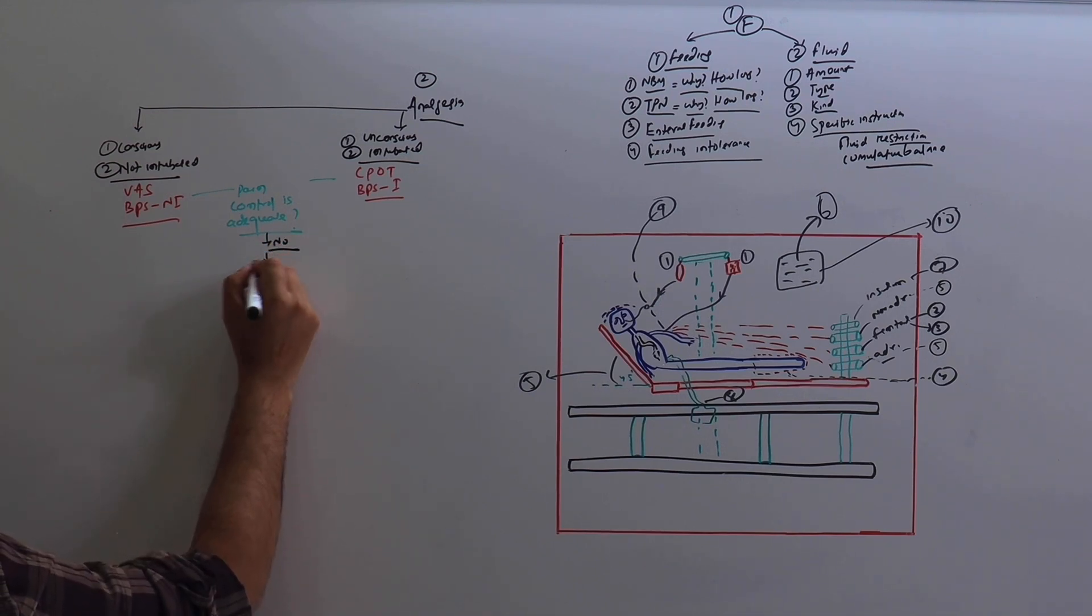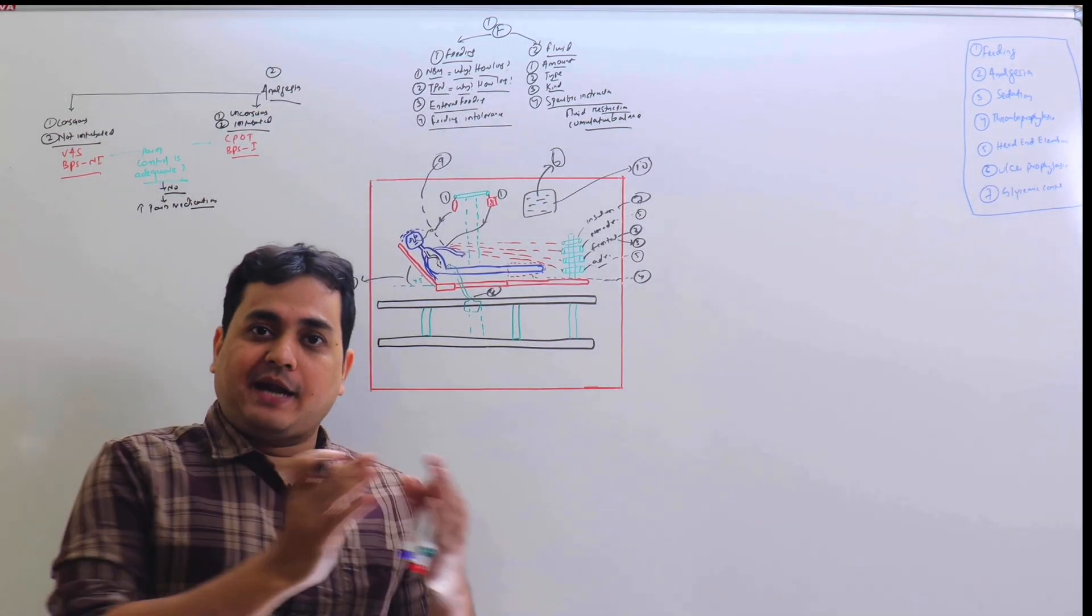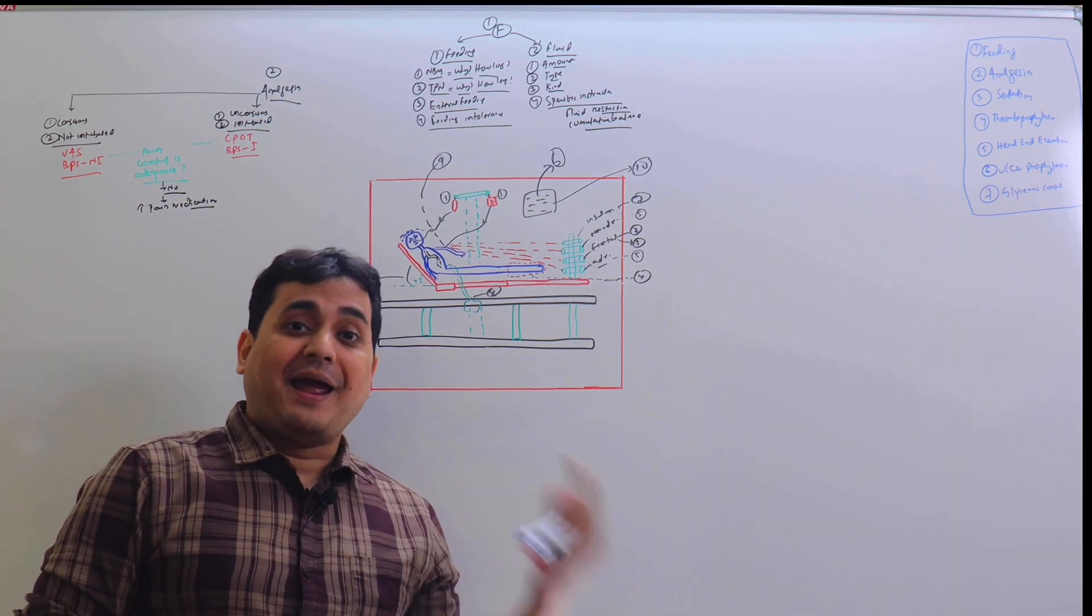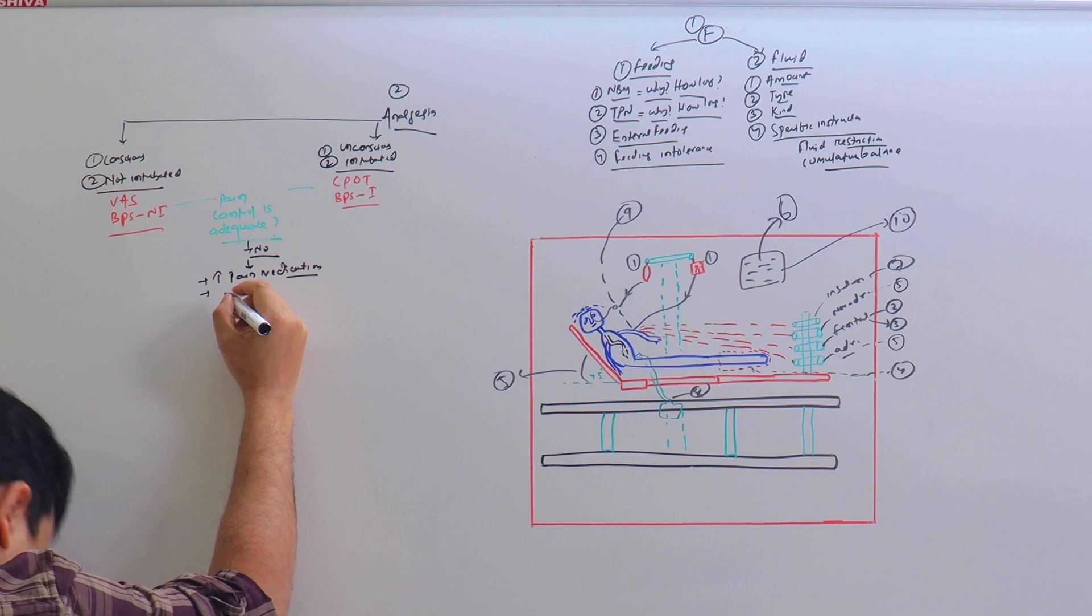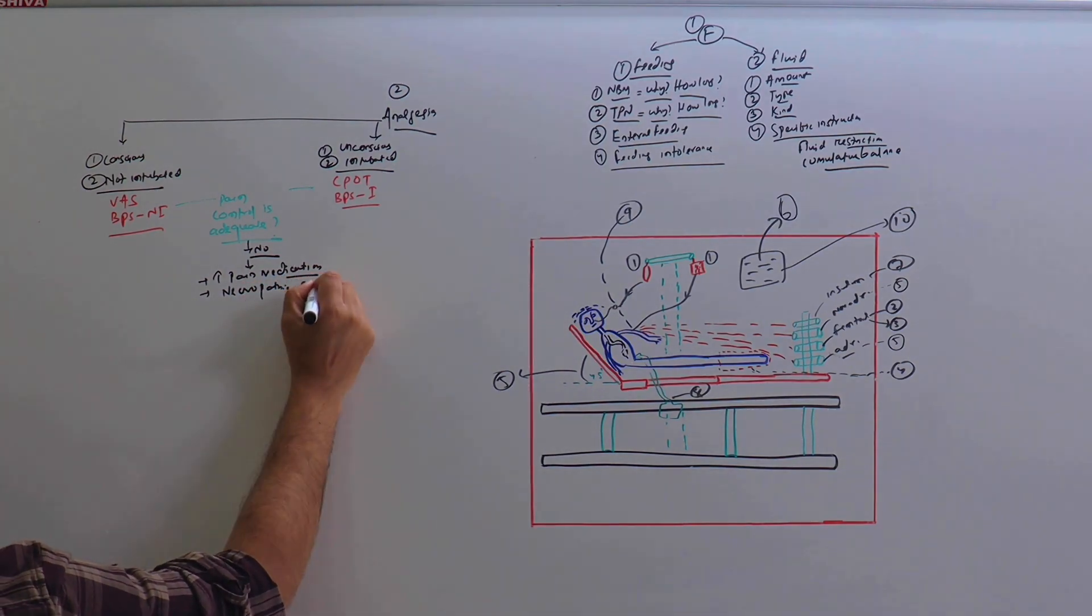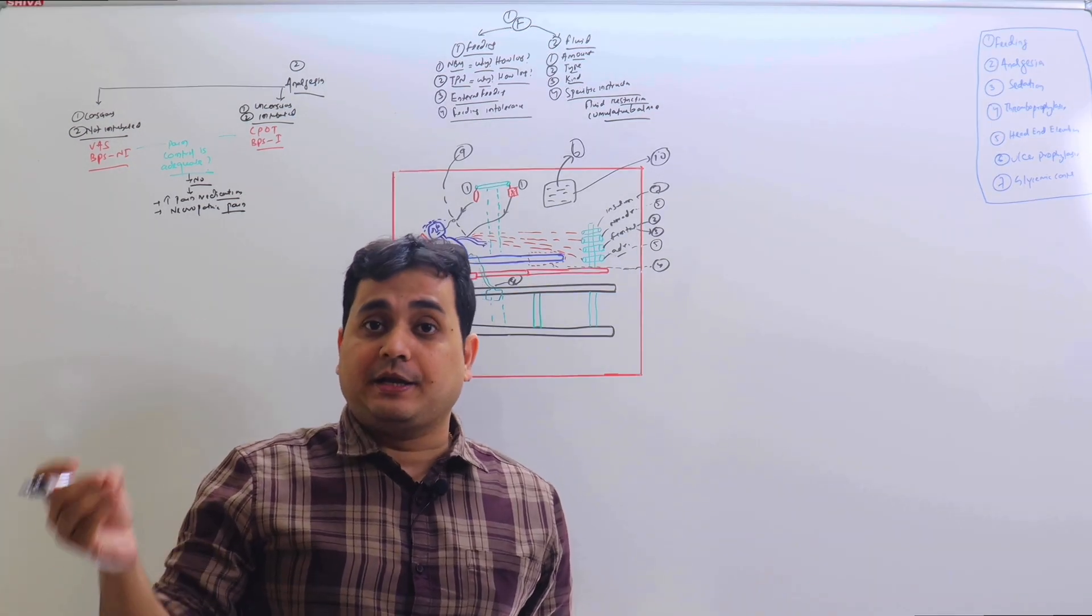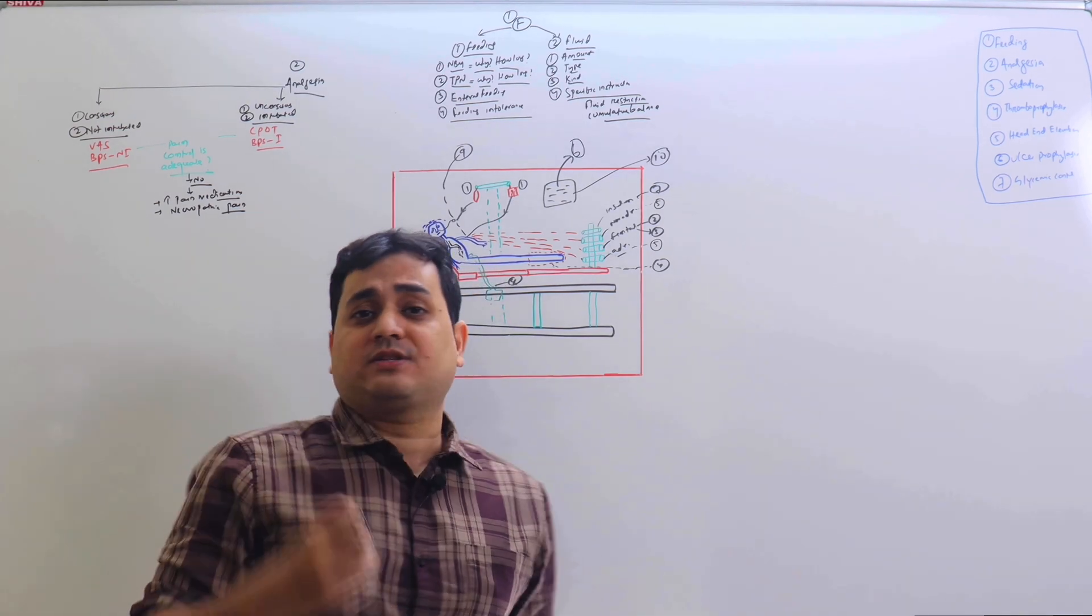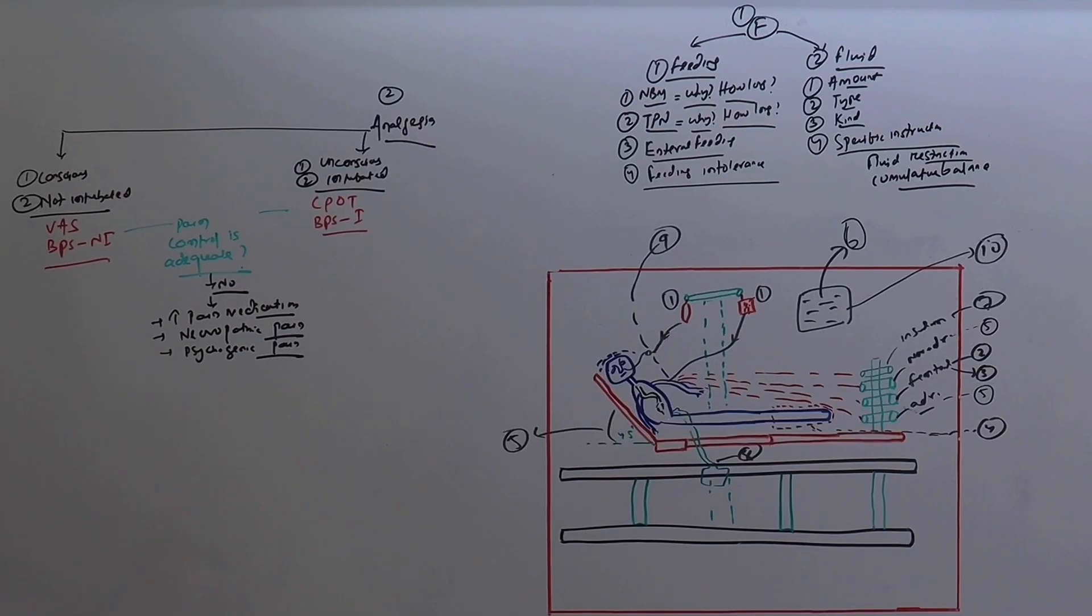If the answer is no, then you may need to escalate pain medication. Here you need to follow the WHO pain ladder. If the person is receiving only paracetamol, you can add a weak opioid like tramadol, and the next step will be adding a stronger opioid like the parenteral formulation. Here also you need to find out if any other kind of pain is present or not—neuropathic pain. Because in neuropathic pain, apart from the usual pain medication, you may need to give the patient medications like gabapentin, pregabalin, SSRIs like duloxetine, tricyclic antidepressants like amitriptyline. Also, the patient can have psychogenic pain.